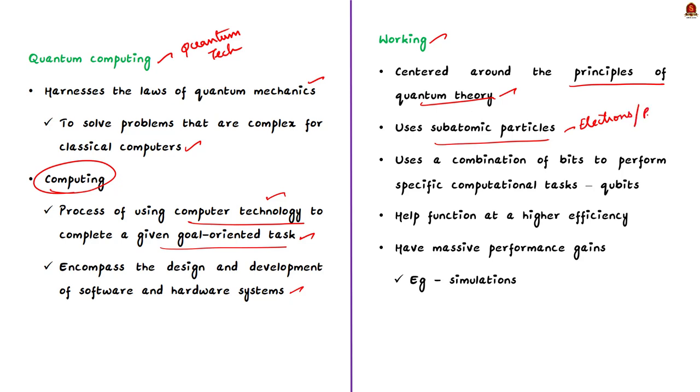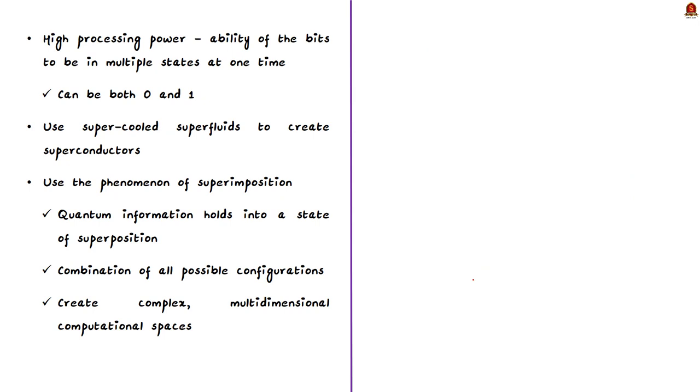Also, quantum computing uses a combination of bits to perform specific computational tasks. And these bits are called qubits. These help the quantum computers to function at a higher efficiency than the classical counterparts. Development of quantum computers mark a leap forward in computing capability. For example, quantum computing excels at simulations. The quantum computer gains much of its processing power through the ability of the bits to be in multiple states at one time.